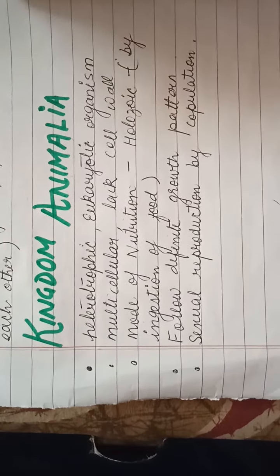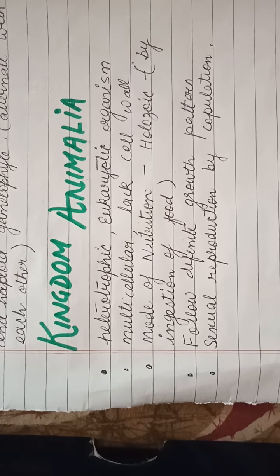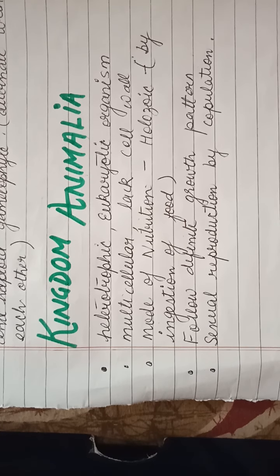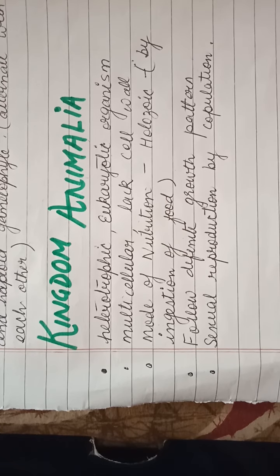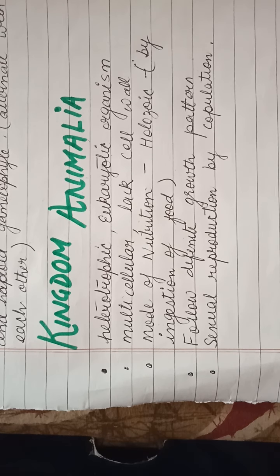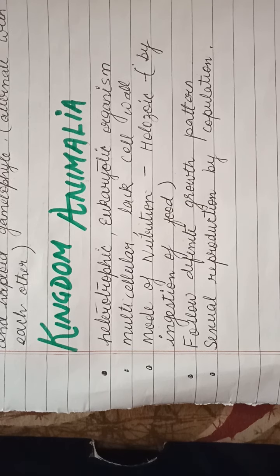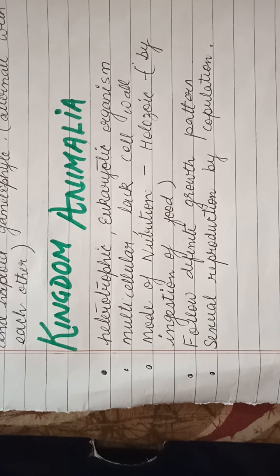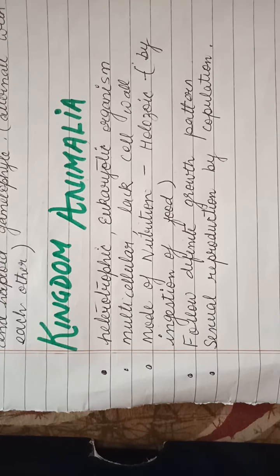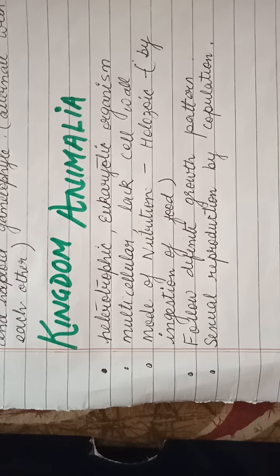Now, in kingdom Animalia — what characteristics do we study? They are multicellular, heterotrophic, and eukaryotic organisms. The basic thing here is that they do not have a cell wall. In kingdom Plantae the cell wall is present, which is made up of cellulose, but the absence of cell wall is an important character of Animalia. The mode of nutrition in Animalia is holozoic — that means they ingest solid food. That is why we call it holozoic nutrition.